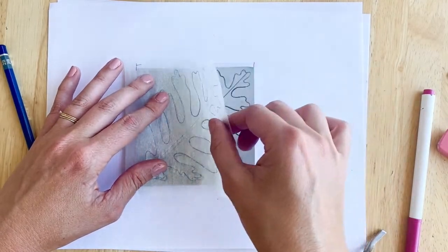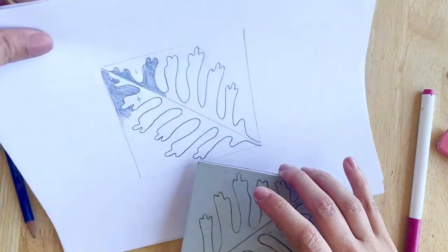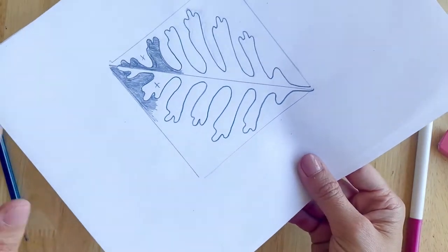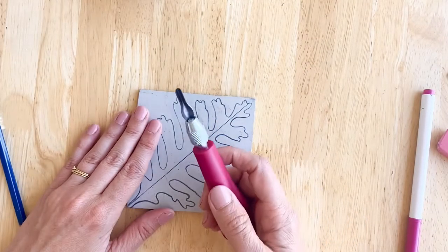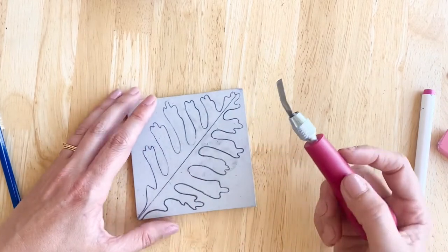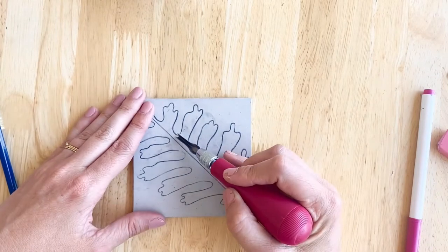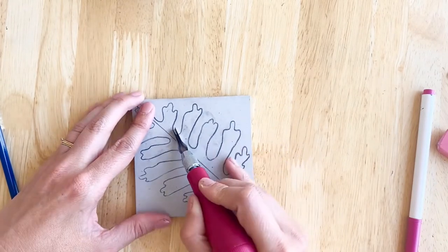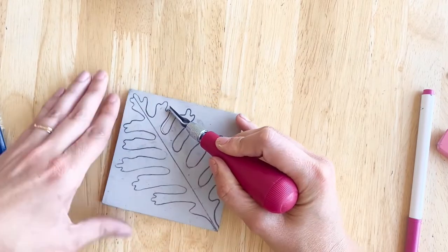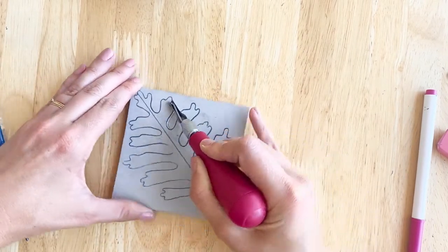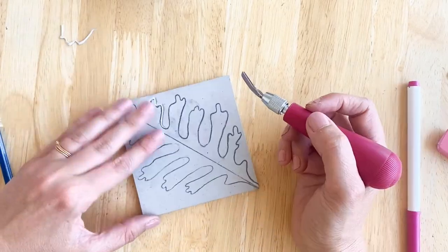So now I've transferred the design and it's on the block. So we can begin carving and I can use this as a guide. So I have my carving tool here and I'm going to pay attention to carving the negative space on one side of the leaf and the positive space on the other side. So I love this soft cut linoleum. It's so easy to use.